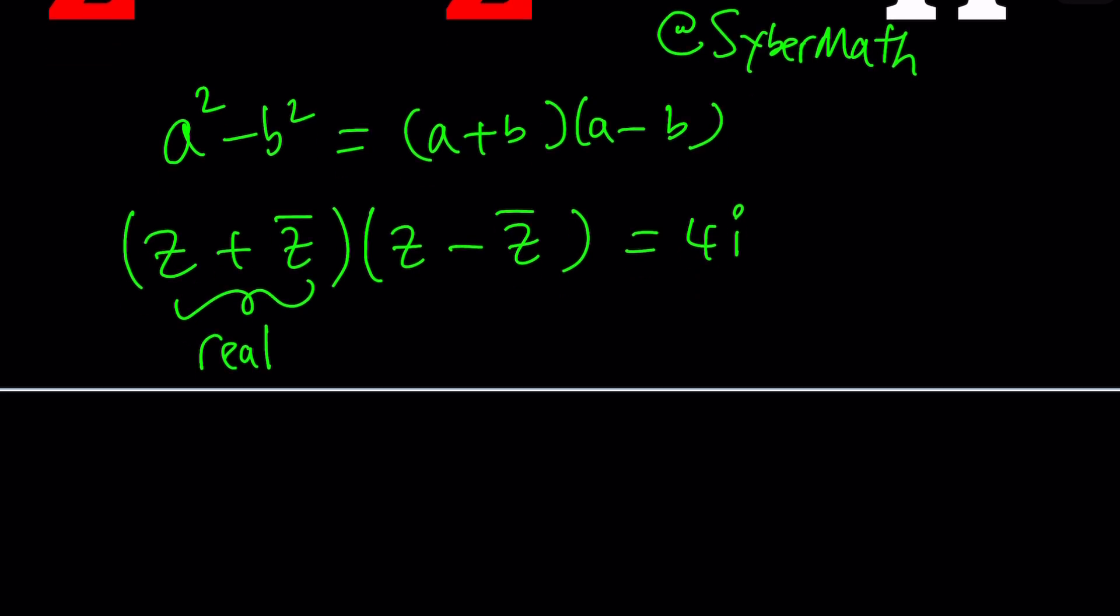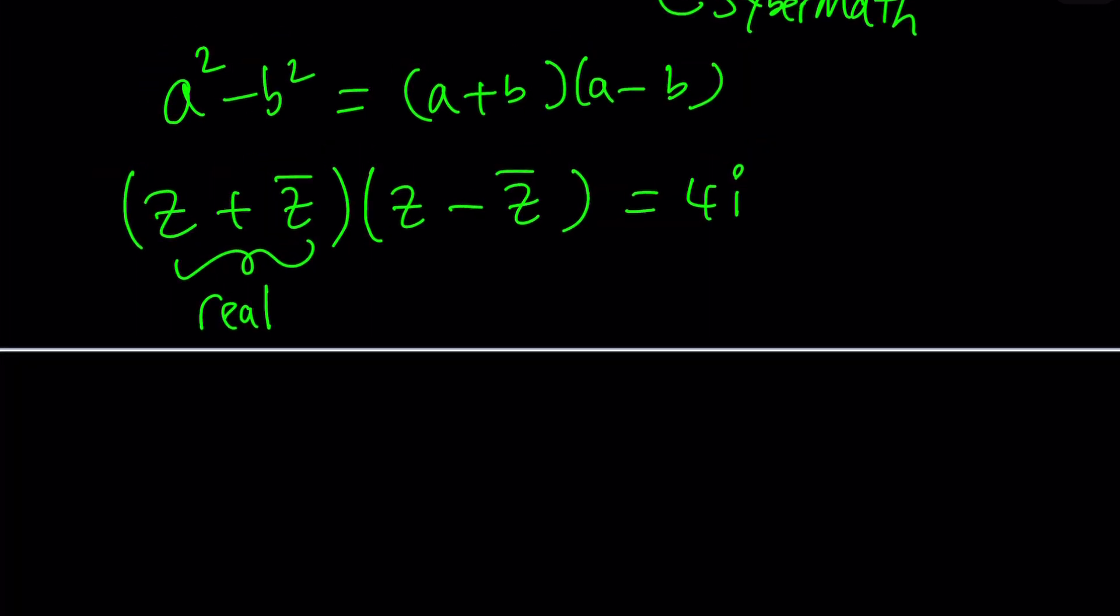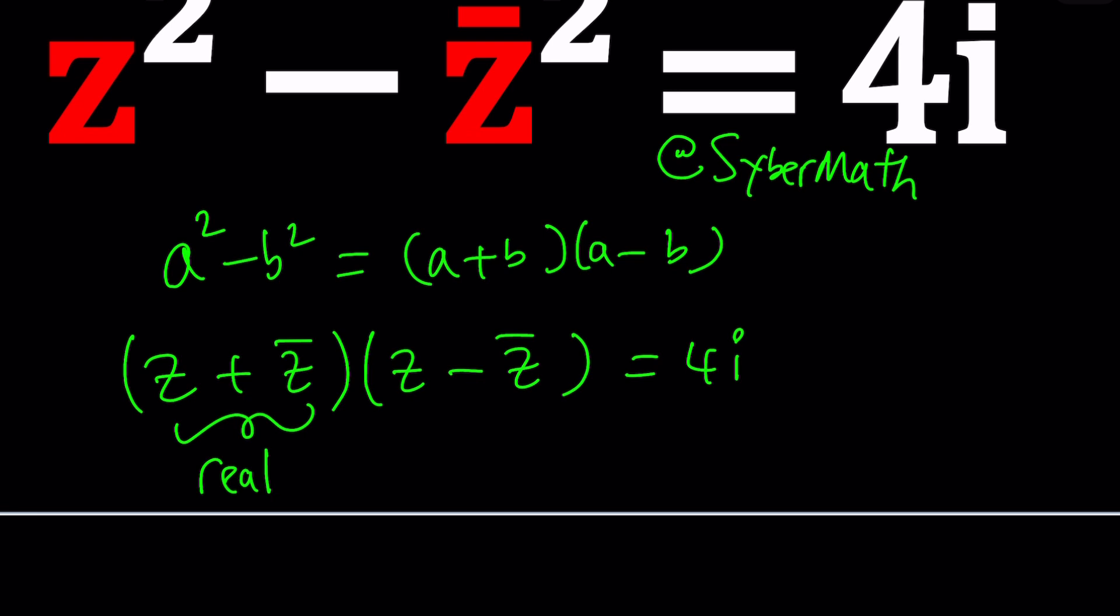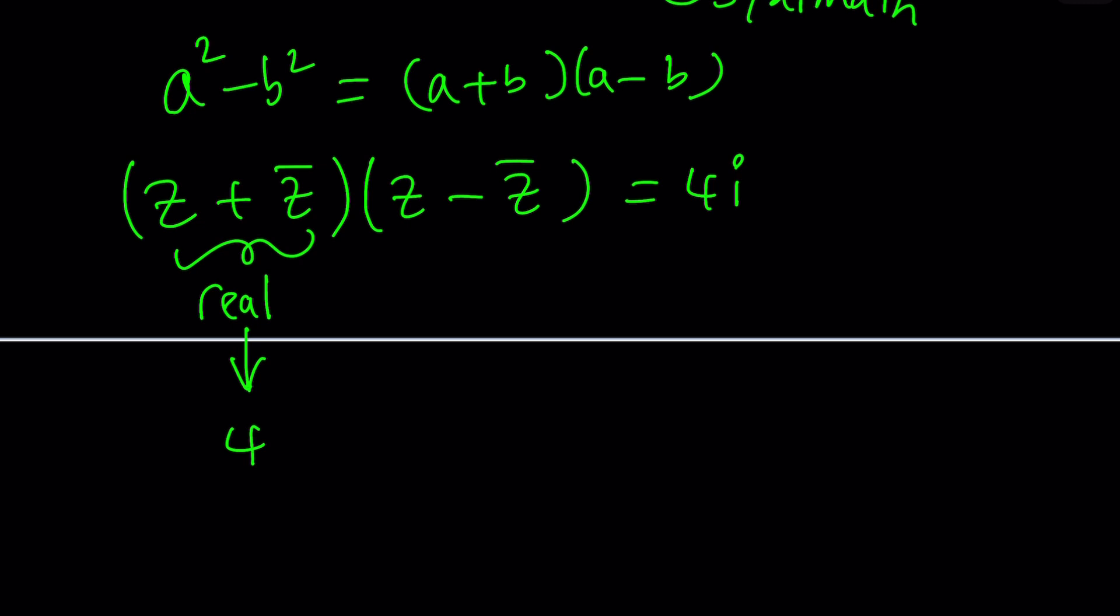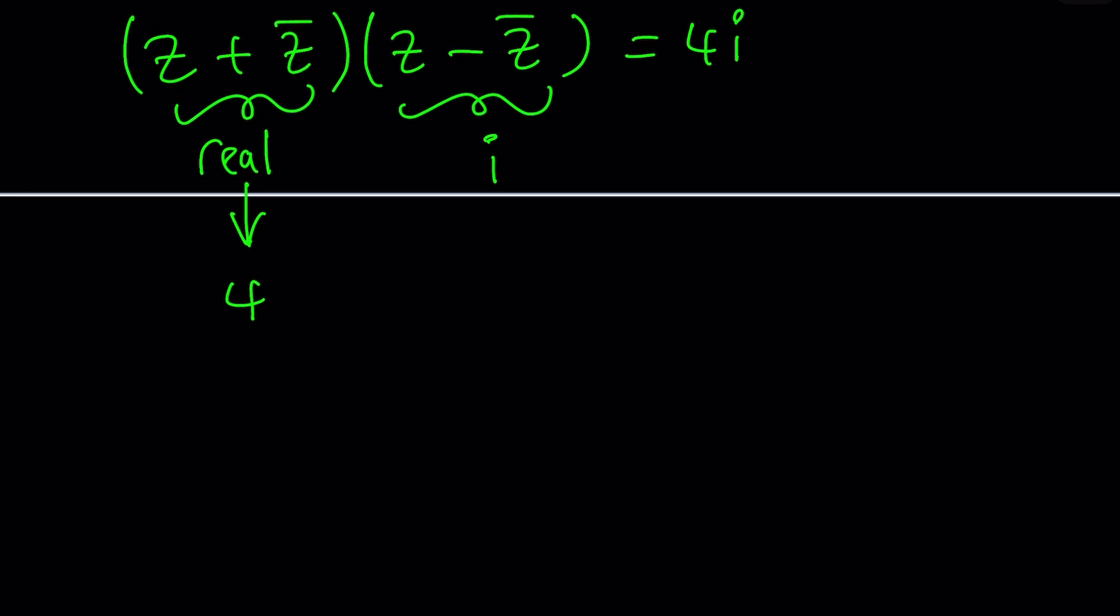So how do we go from this to the solution? Maybe we can conjecture and try to confirm it. For example, if this part is real, the other part must be imaginary, right? Because we're multiplying something by something and we're getting 4i. So maybe this is 4 and this is i. Is that possible? That's a possibility, right? So let's go ahead and test it. But that's not the only possibility. The sum could also be 2 and the difference could be 2i. Or the sum could be 1 and this could be 4i. So we're going to need to look at all these possibilities, right? And are those the only possibilities?